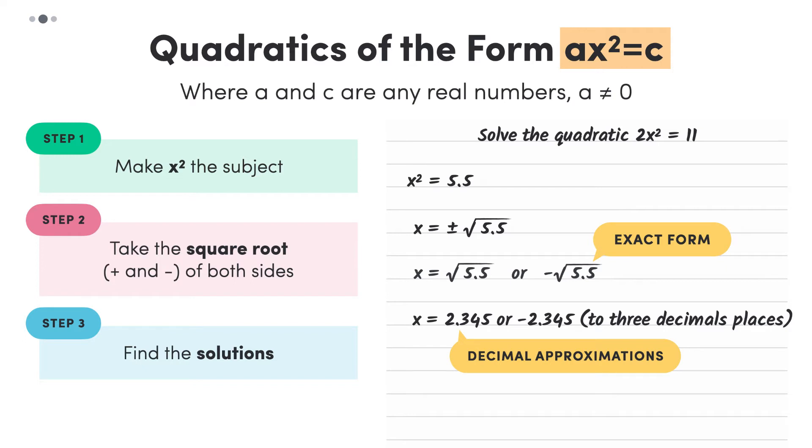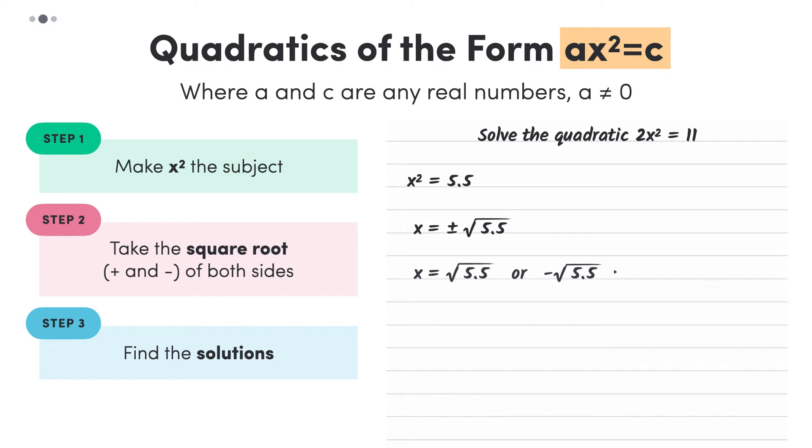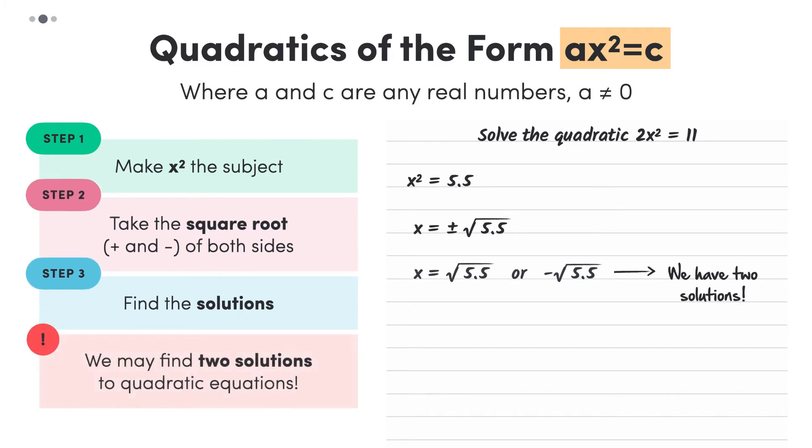So now that we have our solutions, which one does x equal? Well, we don't know. We have two solutions. And we didn't just happen to find two solutions in this particular example. Whenever we're dealing with quadratic equations, it's possible to find two solutions because of the squared variable.